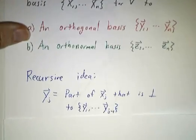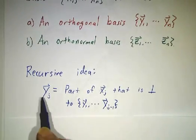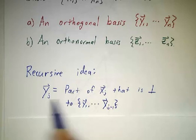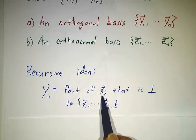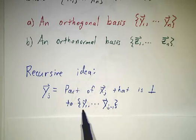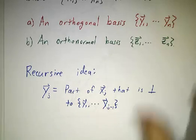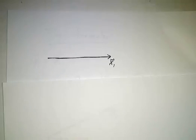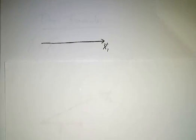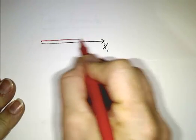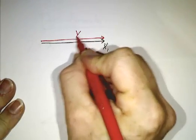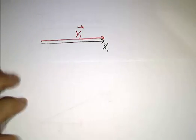So the idea is recursive. We're always going to let each y vector be the part of the corresponding x vector that's perpendicular to all of the previous y vectors. So this is most easily described with pictures. Our very first y vector, well, we take our very first x vector, and we want the part of it that's perpendicular to everything that's come before. Well, there isn't anything that came before, so our very first y vector is the same as our very first x vector.